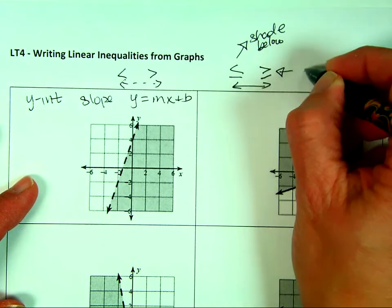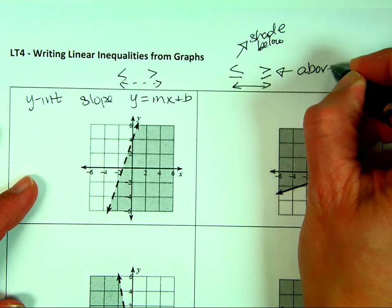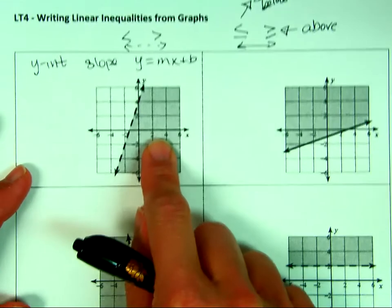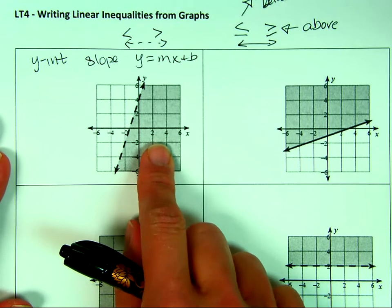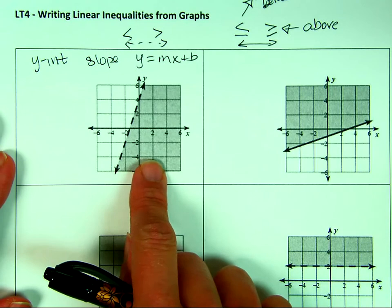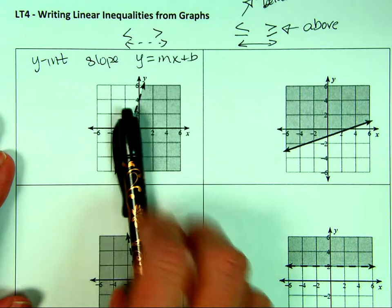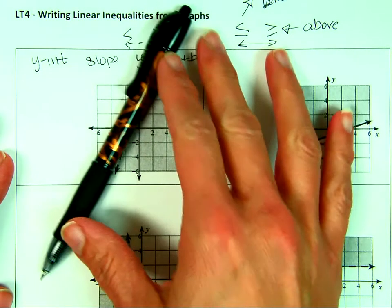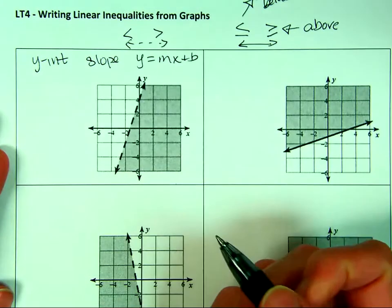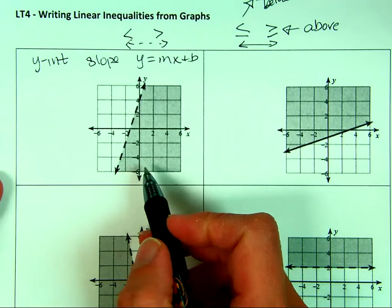Shade below. And then greater than or equal to we shaded above. So when I look at this, sometimes when I was a student it was hard for me to say whether that was below or above. So I always tested a point, but if this is our line, if I move it a little bit, this is below. So the slope is just a little steeper, but this is below and this is above. But once you write it, I'll show you how to test a point.